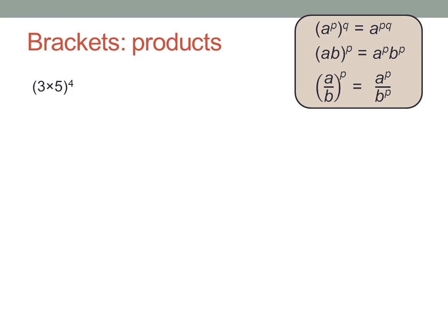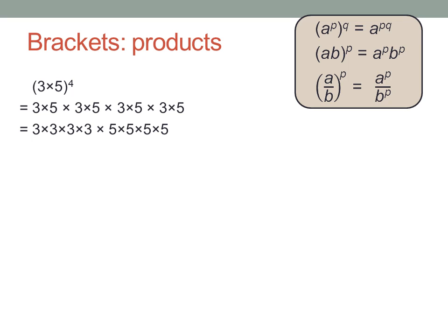What if there's a product inside the brackets? Take three times five, to the power of four — that's three times five multiplied by itself four times. I can rearrange this, since it doesn't matter what order I do the multiplications in. Putting all the threes together and all the fives together, I have four of each. So three times five to the power of four equals three to the power of four times five to the power of four. The power outside the bracket applies to everything inside. Another example: two times nine to the power of three gives three twos and three nines — two to the power of three times nine to the power of three.